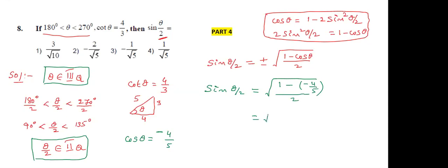Taking the LCM in the numerator: (1 + 4/5) / 2 = (9/5) / 2 = 9/10. So sin(θ/2) = √(9/10) = 3/√10. This is the sin(θ/2) value. The first option is correct.